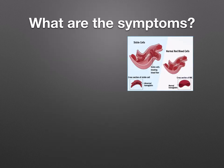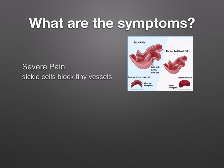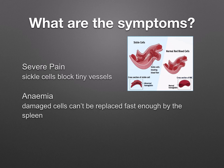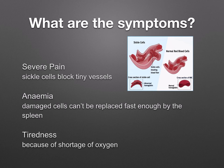What are the symptoms of someone who has sickle cell anemia? Severe pain, because the sickle cells block tiny vessels. Anemia, because damaged cells can't be replaced fast enough by the spleen. And tiredness, because of a shortage of oxygen.